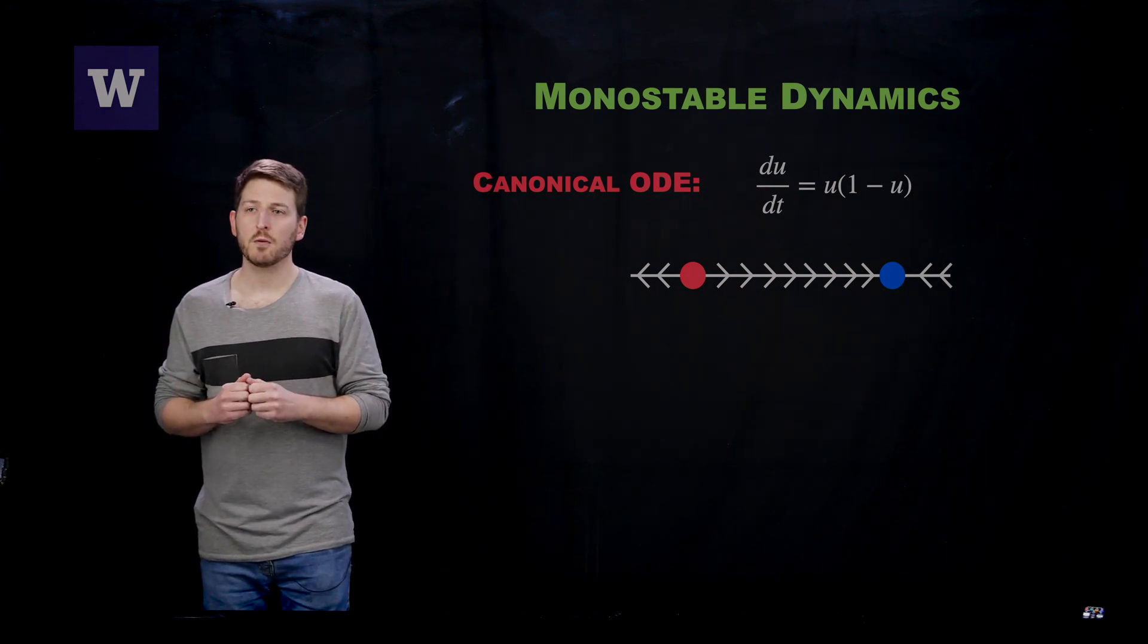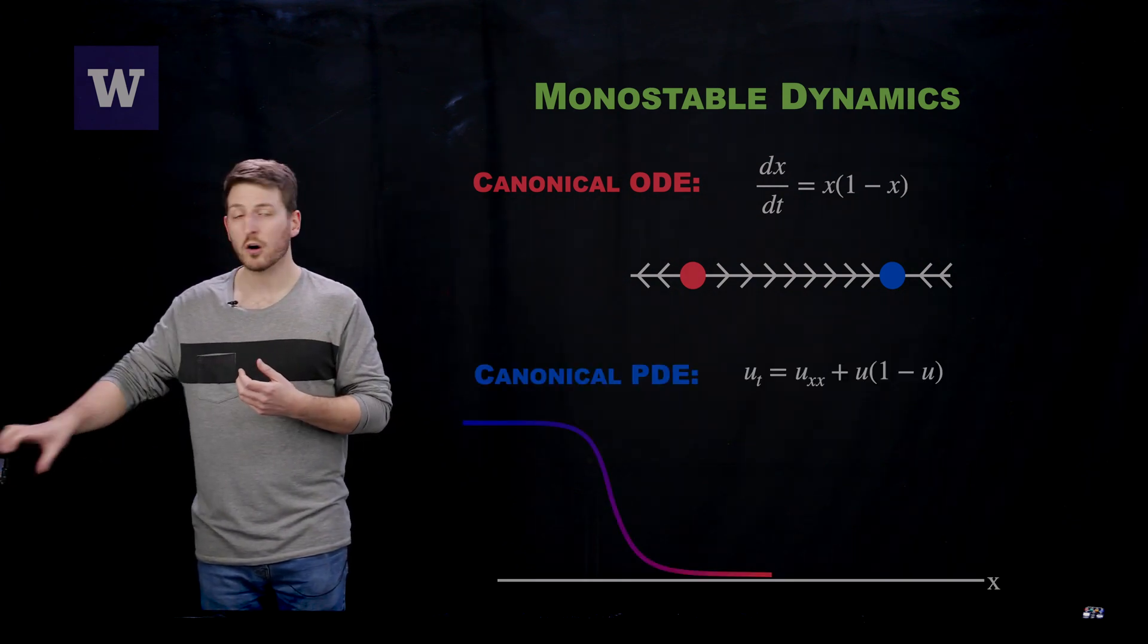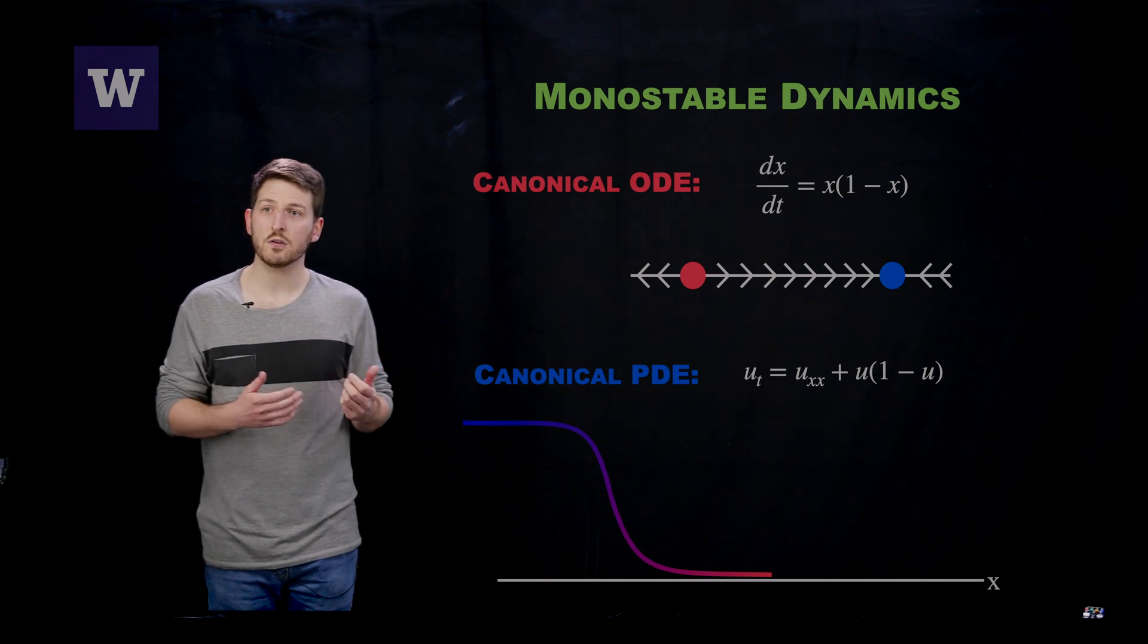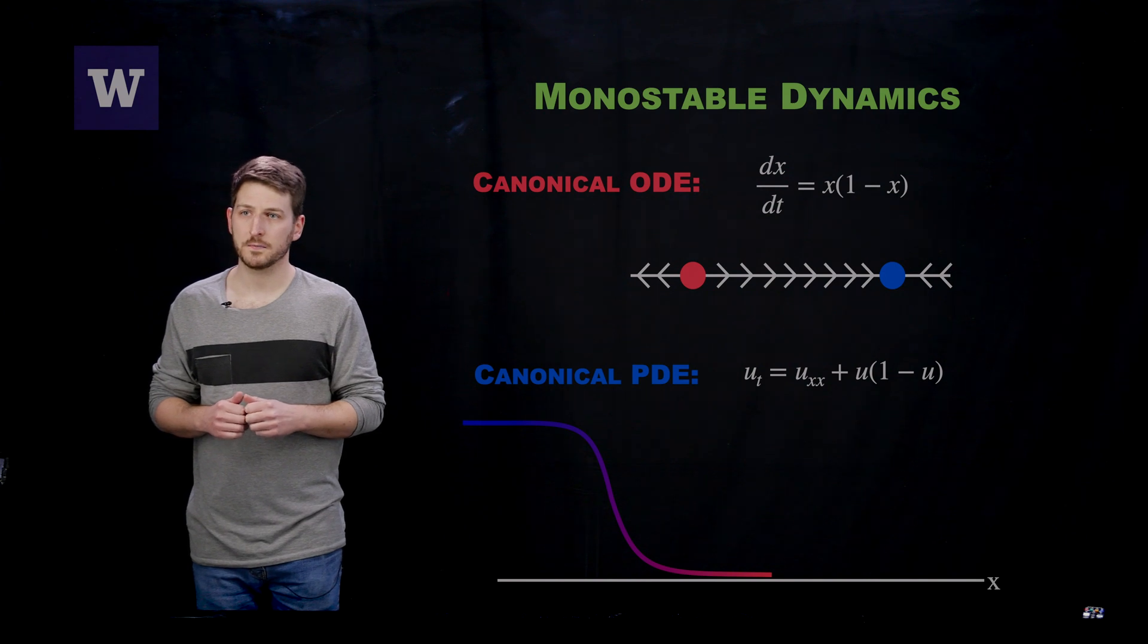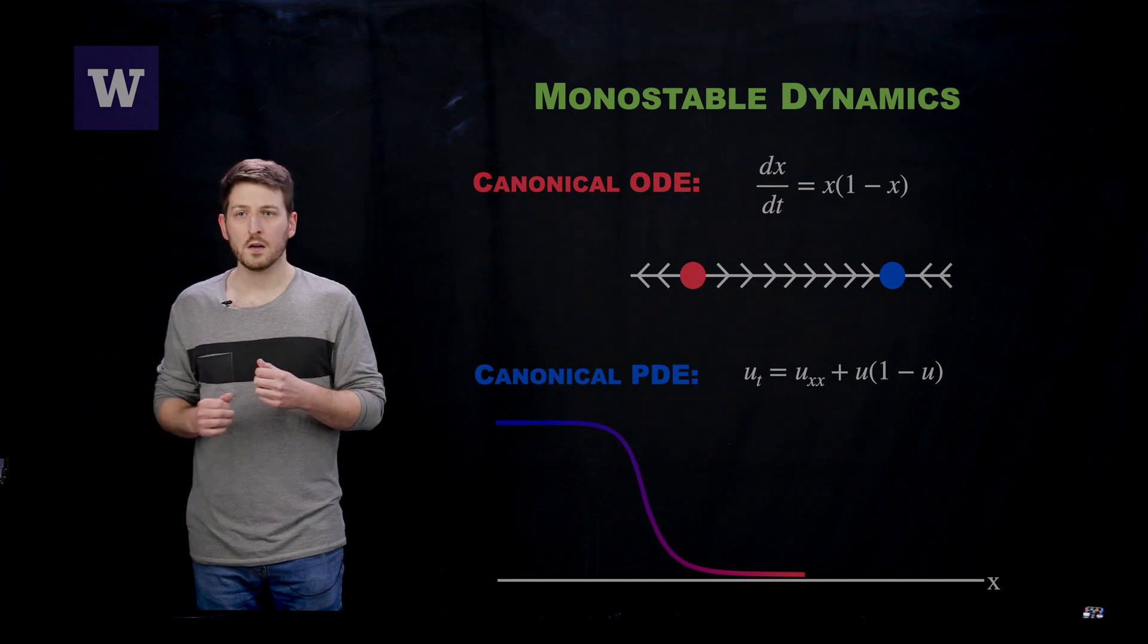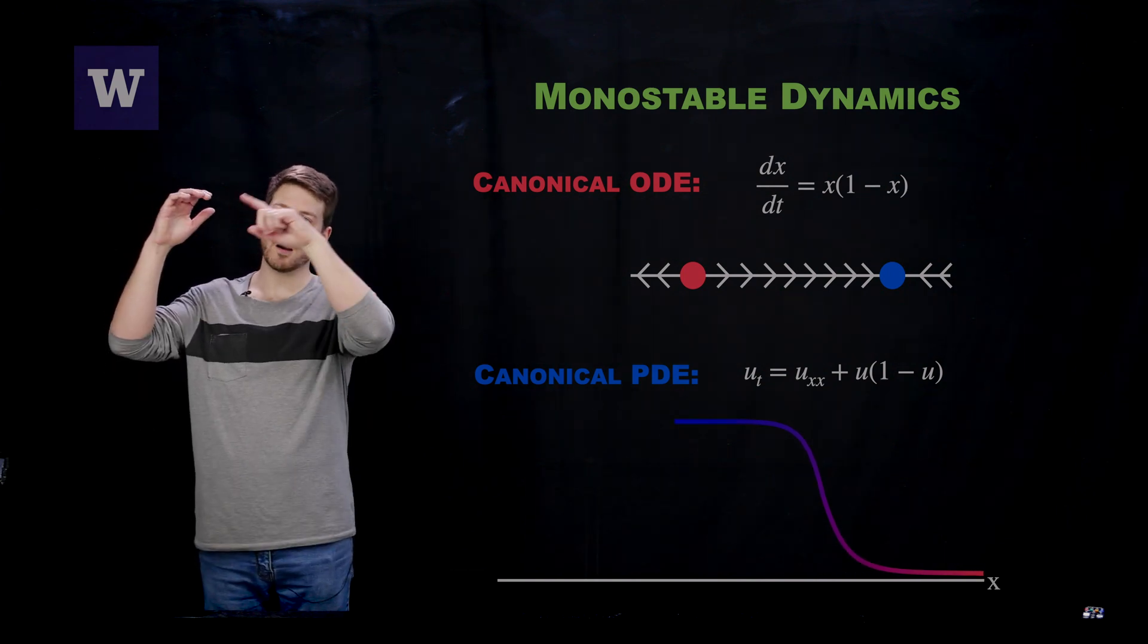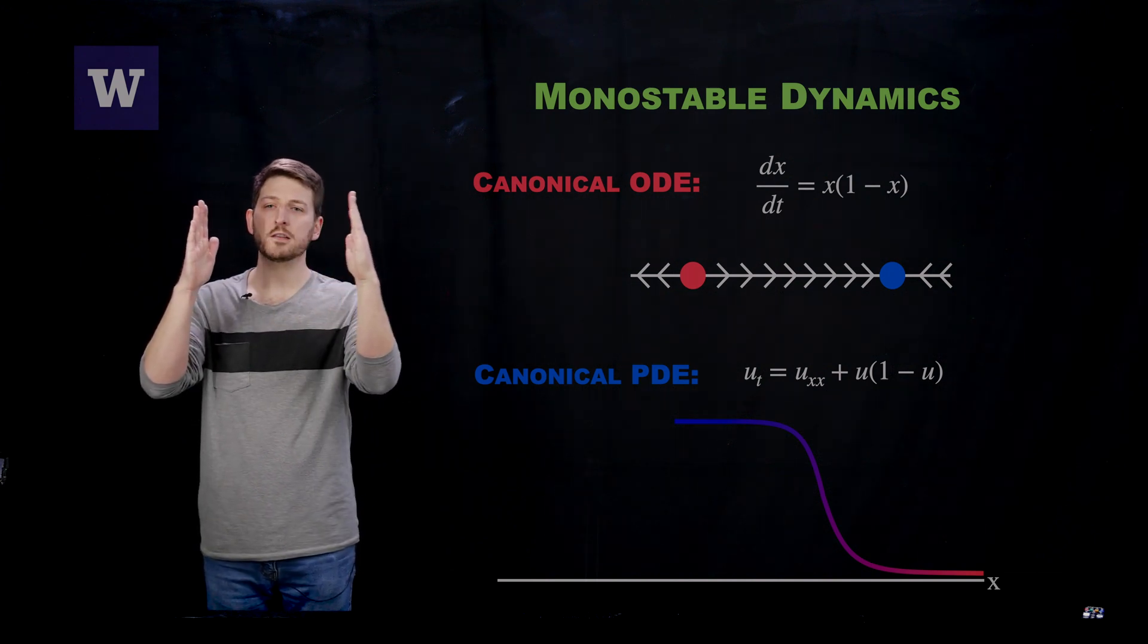Now we can step up the complexity from the ordinary differential equation model to a related partial differential equation model known as the Fisher-KPP equation. This is a reaction-diffusion equation, and you can see that logistic nonlinearity tacked on the end of it. In this prototypical monostable system, we typically find solutions that are referred to as traveling waves.